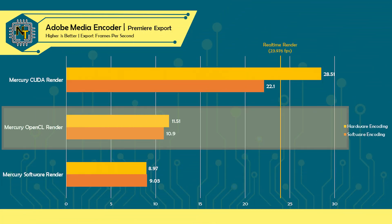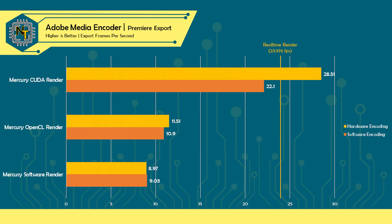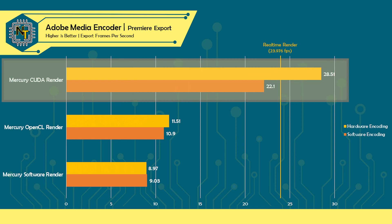Next up is OpenCL render acceleration, which sees export speeds increase to around 10.9 FPS, and turning on hardware accelerated encoding increases that to 11.51 FPS — just outside our margin of error. Turning to CUDA, we see a gigantic increase in export speed, doubling our software encoded speed to 22.1 FPS, and then another 29% on top of that when we turn on hardware accelerated encoding. But what exactly do CUDA and OpenCL mean in these contexts?